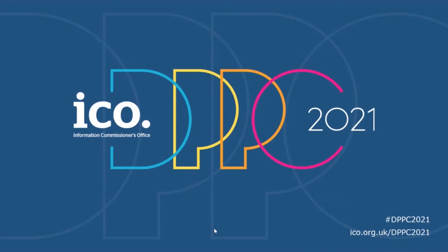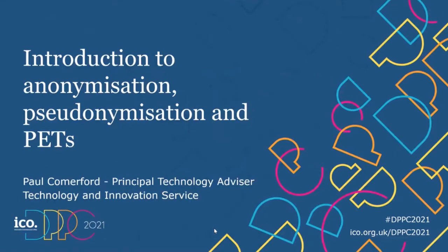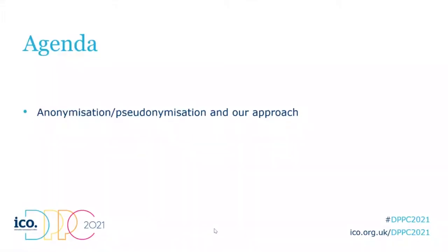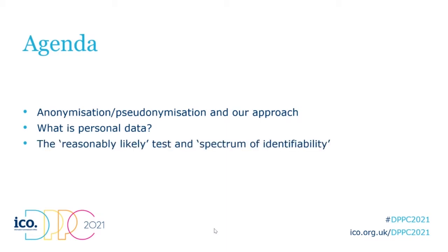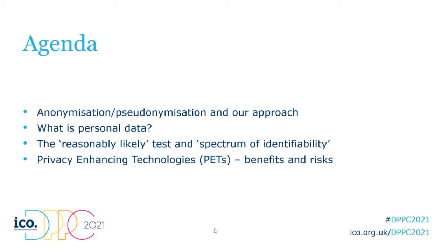Hello everyone, my name is Paul Commerford, I'm a Principal Technology Advisor at the ICO. Today I'm going to talk about anonymization, pseudonymization, and Privacy Enhancing Technologies, also known as PETs. I'll cover the ICO's view and approach to guidance, how controllers should determine whether data is personal, the reasonably likely test, the spectrum of identifiability, benefits and risks of PETs, and plans for upcoming guidance.